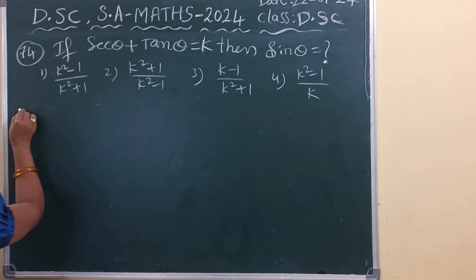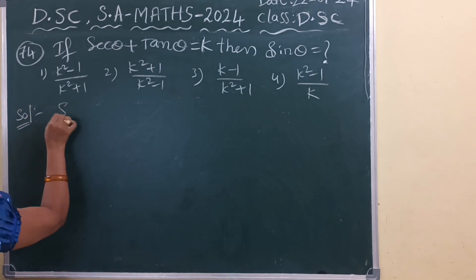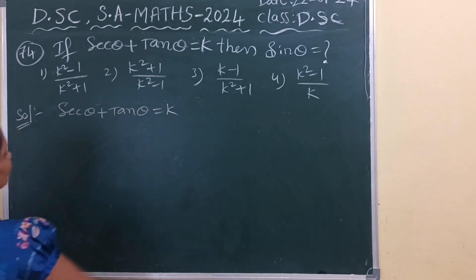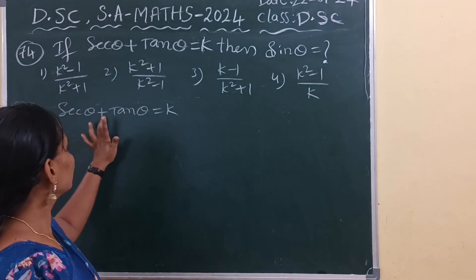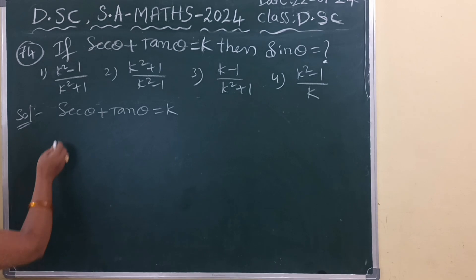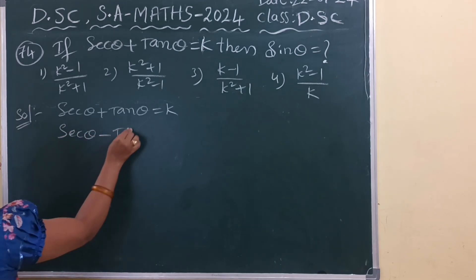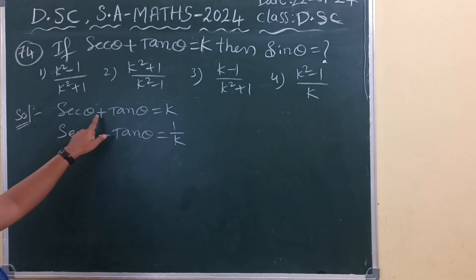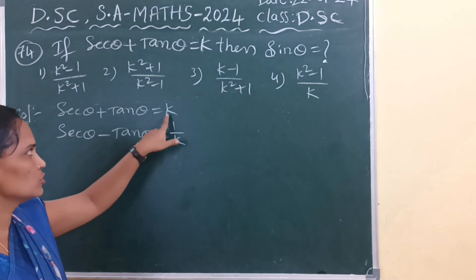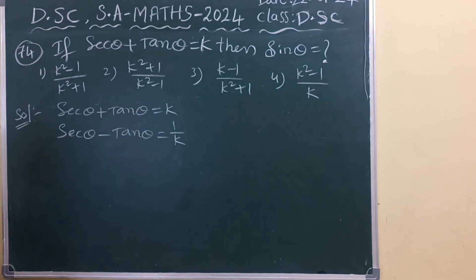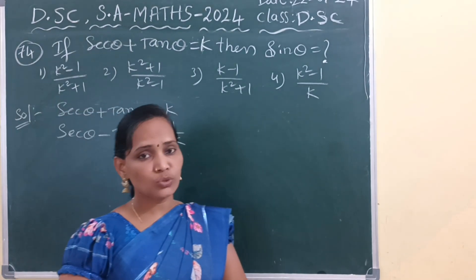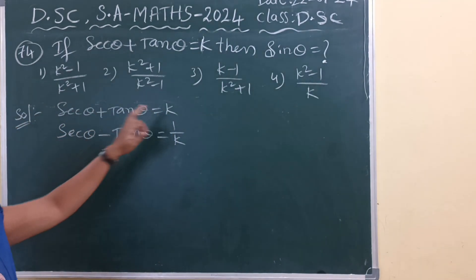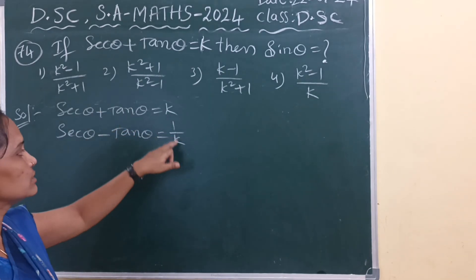So for the solution: sec theta plus tan theta is equal to k. If sec theta plus tan theta equals k, then we can take sec theta minus tan theta equals 1 by k — the reciprocal of the given number. This is a shortcut method: if the sign is plus with some number, when you take the minus version, you take the reciprocal of that number.